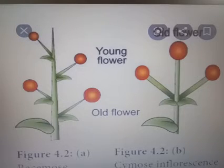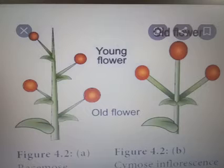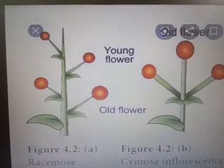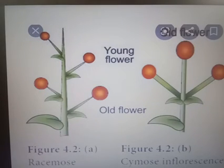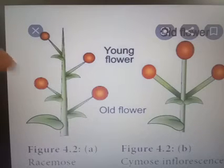An example for this group is Crotalaria cassia — cassia means kanikkonna. In the first figure, the young flowers are seen at the top portion and the old flowers are seen at the base portion. That is racemose inflorescence.